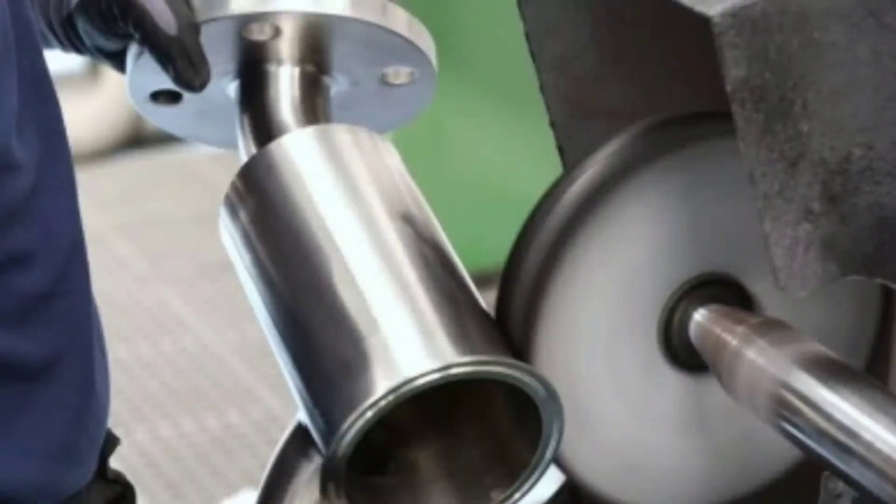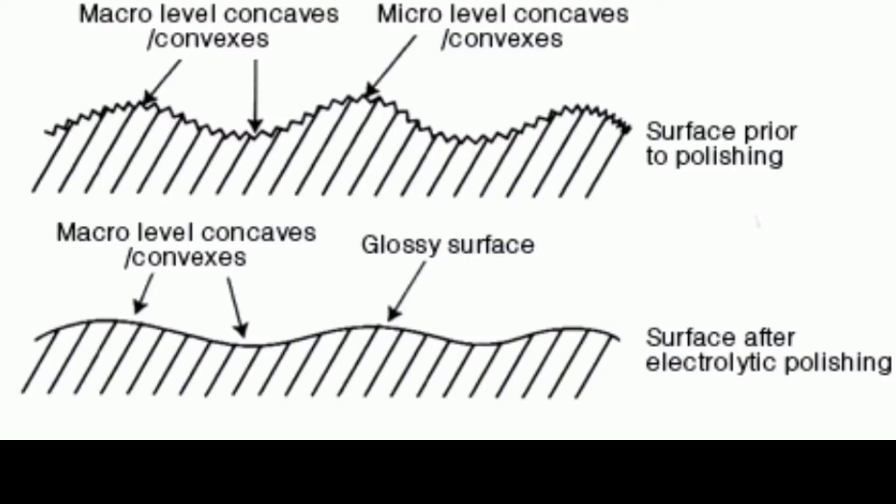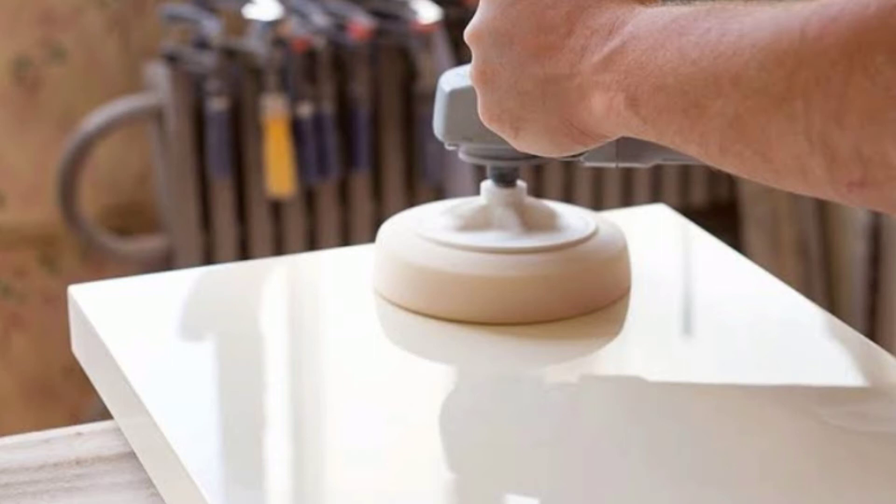Third, by polishing. The surfaces are highly polished to eliminate the irregularities. This makes the surfaces smooth and reduces friction to a great extent.